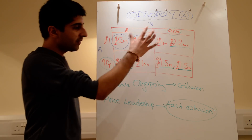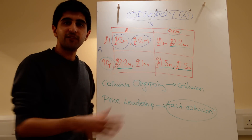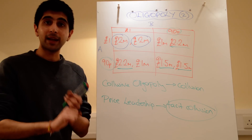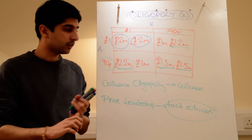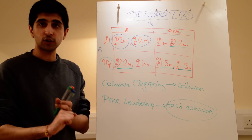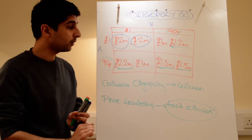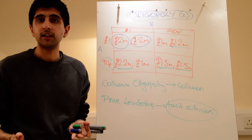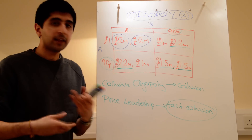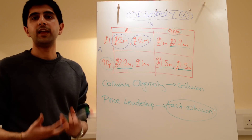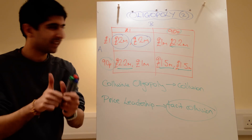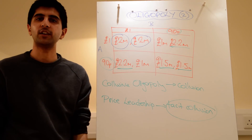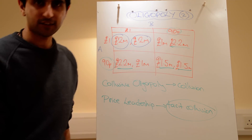The performance evaluation of oligopoly very much depends on whether we're working with competitive oligopolies or collusive oligopolies. Collusive oligopolies can be terrible; competitive oligopolies can be great. It very much depends on what we're working with. Very interesting market structure — see you next time.